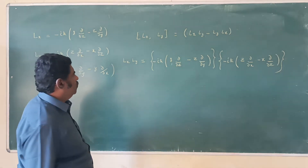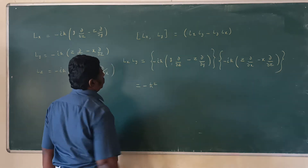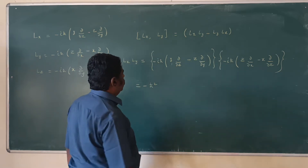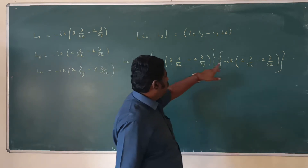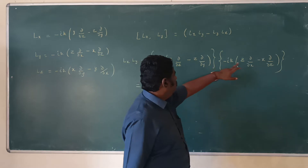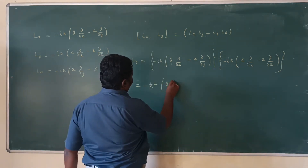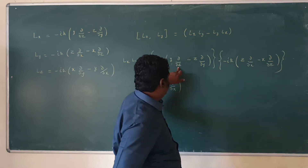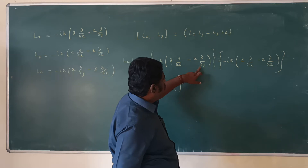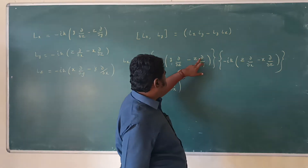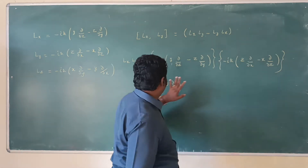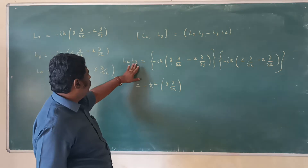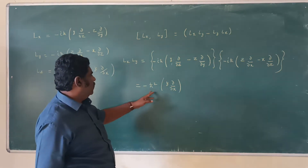So the value becomes ℏ². Now apply the operator ∂/∂z on the first term. Since ∂/∂z of z equals 1, the value is y ∂/∂x. That is one term. Then apply ∂/∂z on x: the value is 0, so we need not consider it. For the second operator ∂/∂y: if it operates on z the value is 0, and the same operator on x also gives 0. So the only surviving term is −ℏ² y ∂/∂x. Thus LxLy = −ℏ² y ∂/∂x.